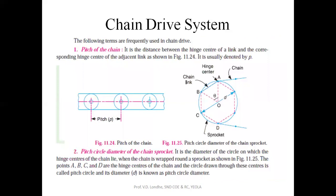The terms used in chain drive systems: first is pitch of the chain. Pitch of the chain is the distance between the hinge center of a link and the corresponding hinge center of the adjacent link. The distance within these two hinge points is the pitch of the chain, denoted by small p.